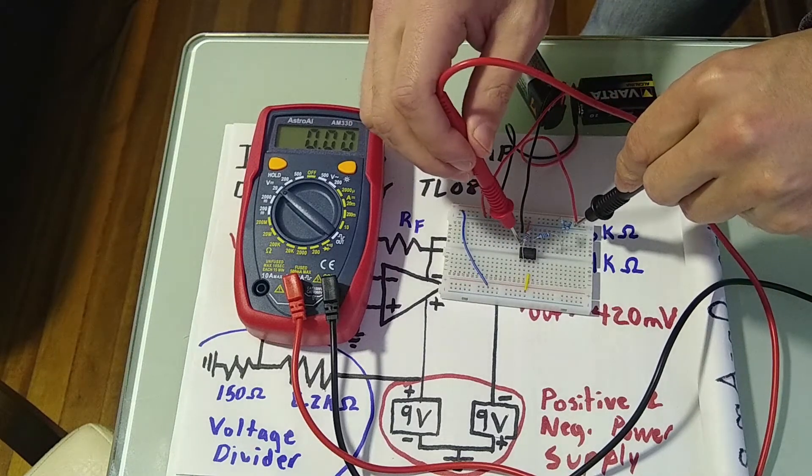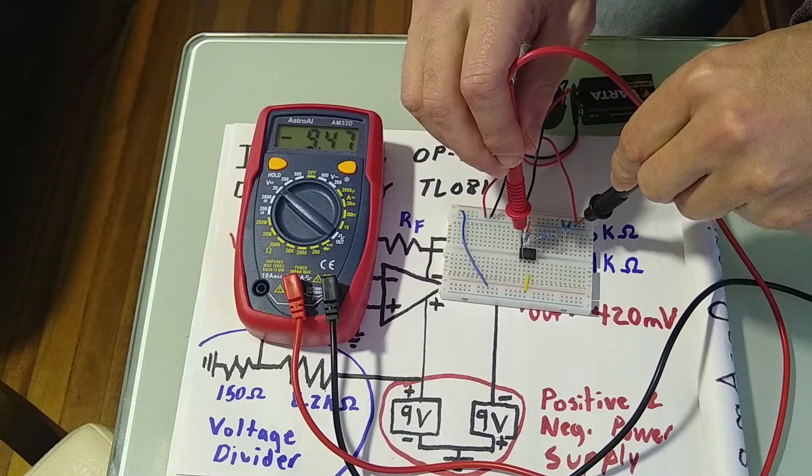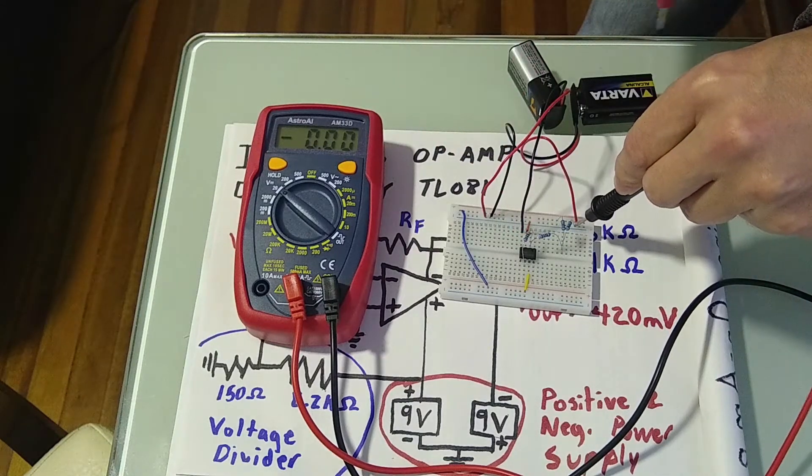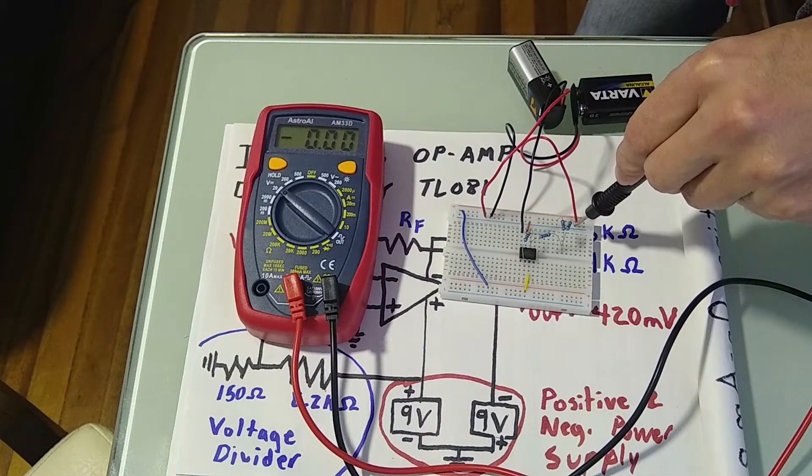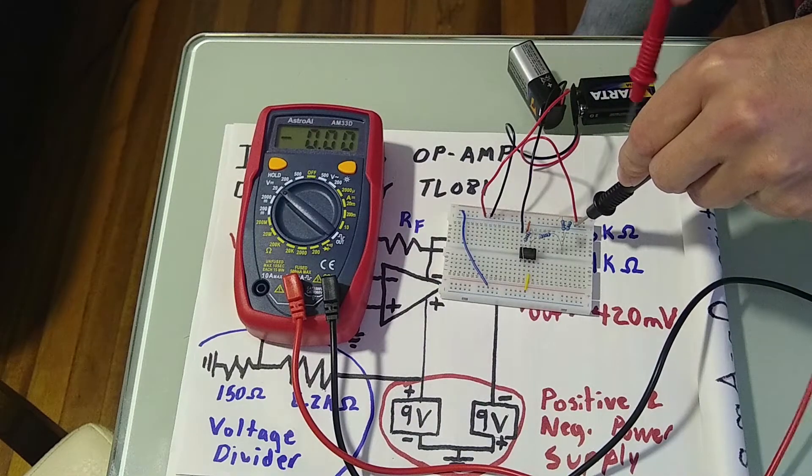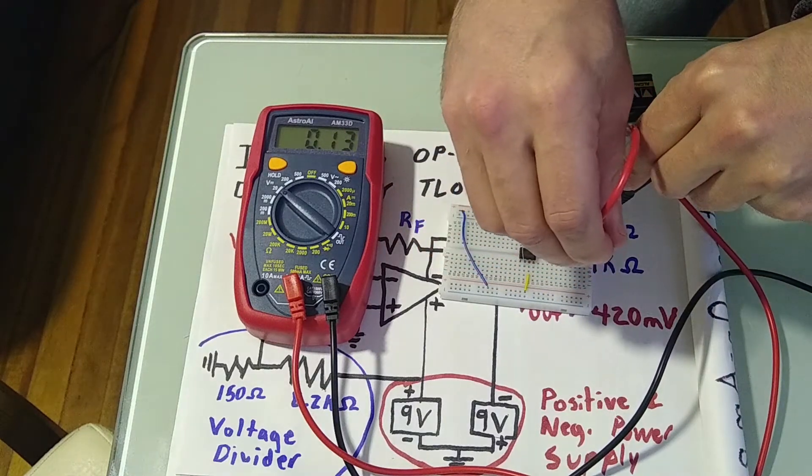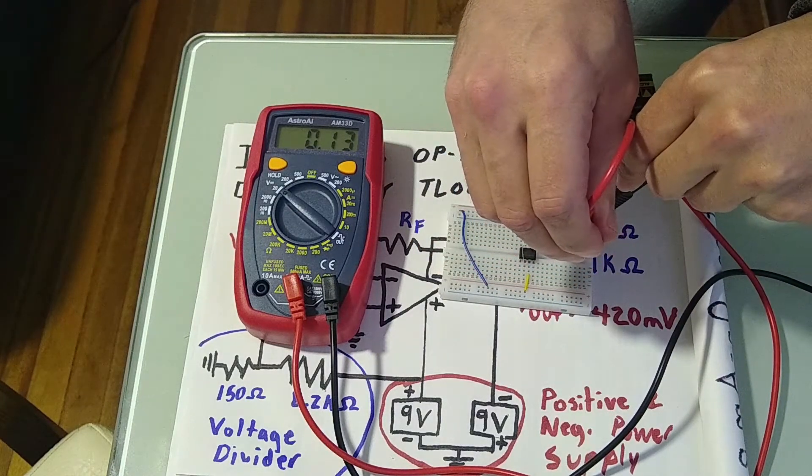To our negative power supply, negative 9.47 volts. It's coming off our two batteries, the voltages are slightly different, that's OK. Now, our input voltage, 0.13 volts.